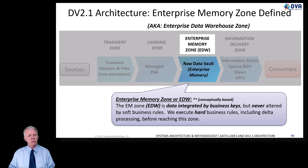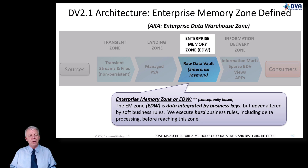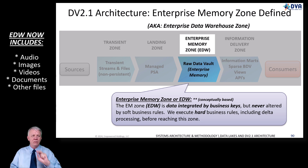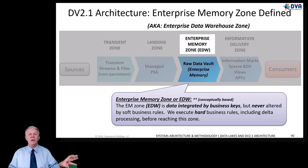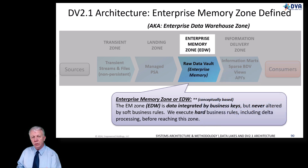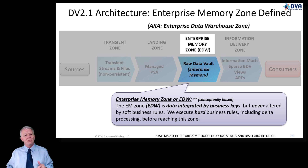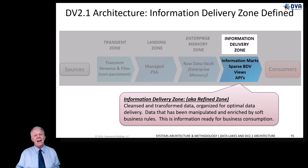The enterprise memory zone is integrated by business keys and business concepts. The data itself in this zone is usually never altered by soft business rules, except in the cases of audio, image, video, and document. Even then, the pre-processing doesn't modify source data — it extracts and produces new files, summarizing, cleansing, adjusting, and aligning in a stepwise process. The source data is never altered to this point — that happens in the information delivery zone.